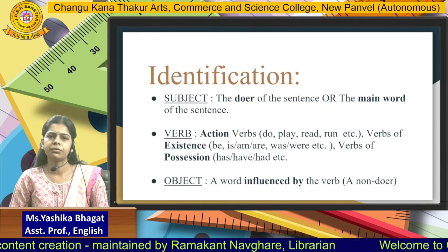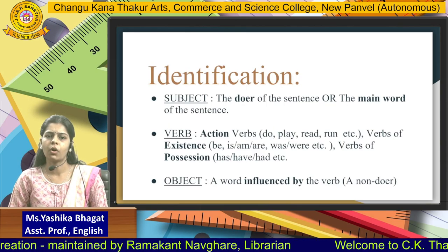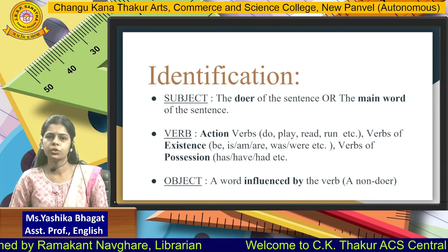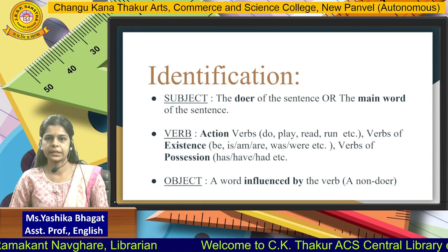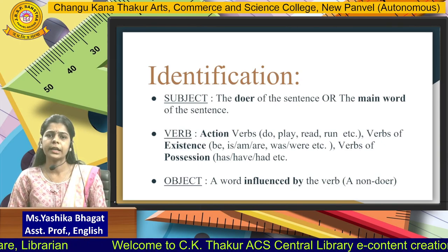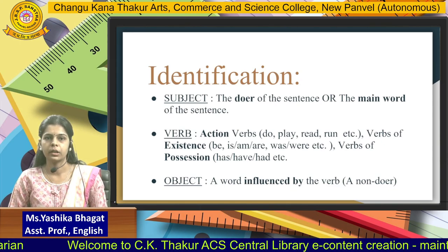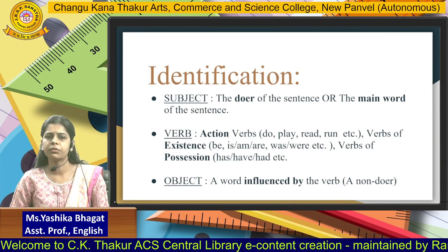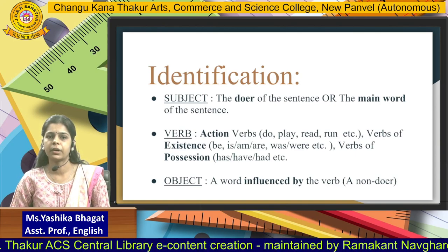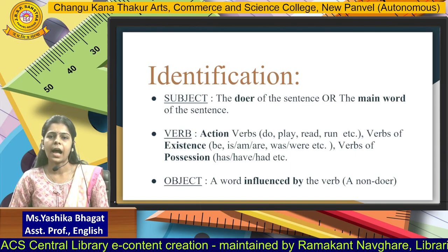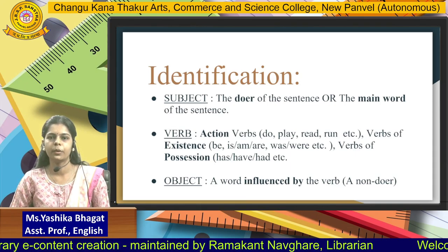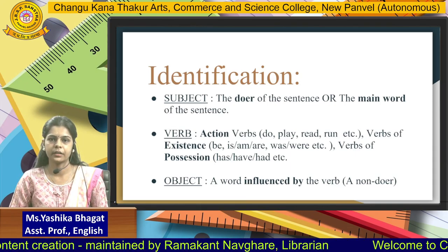How do we identify a subject, a verb, or an object in the given sentence? To identify a subject, you should understand the doer of the sentence or what is the main word in the sentence — what exactly has been spoken about — and then you get your subject. How do you identify a verb? There are three types of verbs. Action verbs: when you understand the actions, for example, do, play, read, run, etc.